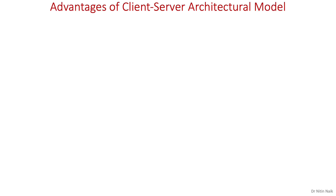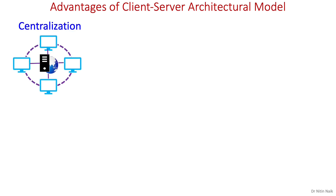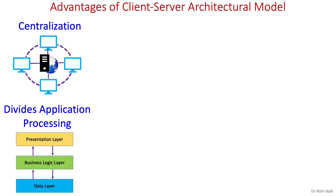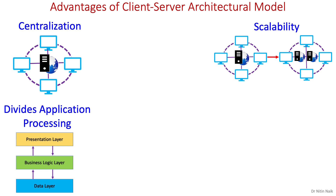Let's look at the advantages of the client-server architecture model. Firstly, centralization of control — in this model, access to resources, data, and operations are controlled by the dedicated server, so it is relatively efficient to manage the network and provide security. Secondly, it divides application processing across multiple layers or tiers and improves the development and management of applications. Next, scalability — the client-server architecture is scalable and new servers or resources can be added to the network to cope with increasing demand.